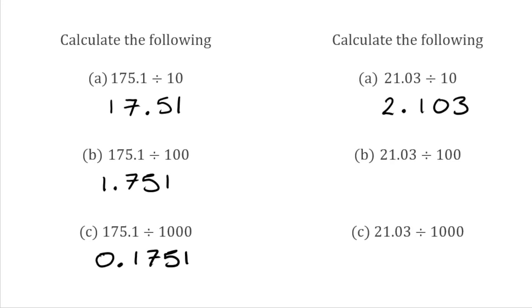For the next one, we've got 21.03 divided by 100. Because we're dividing by 100, we move all the digits two places to the right. The 1 and the 2 both move over to the right-hand side of the decimal. So we show 0 in the units column, our decimal point, then 2, 1, 0, 3. That's our answer: 0.2103.